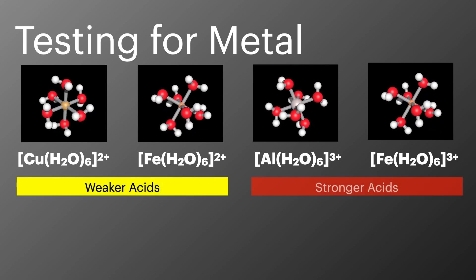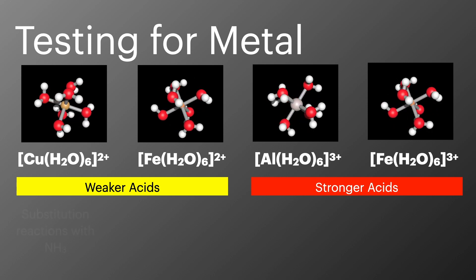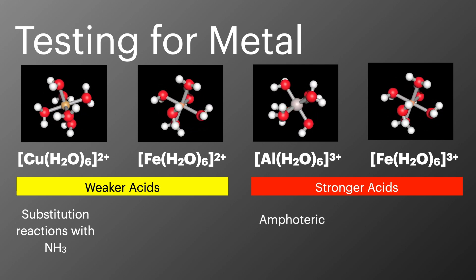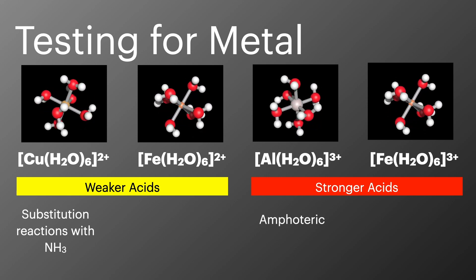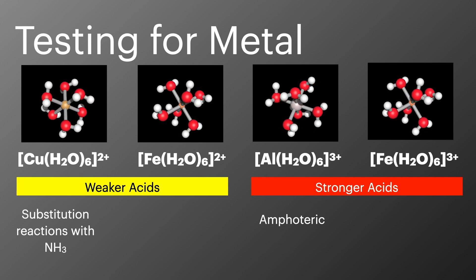The iron 2 plus ions are much weaker acids than the 3 plus ions which are stronger acids. The copper aqua complex will undergo some substitution reactions with ammonia and that aluminium aqua complex forms an amphoteric hydroxide. That's the recap from the last episode and now we're going to look at the tests that we can do on this episode.